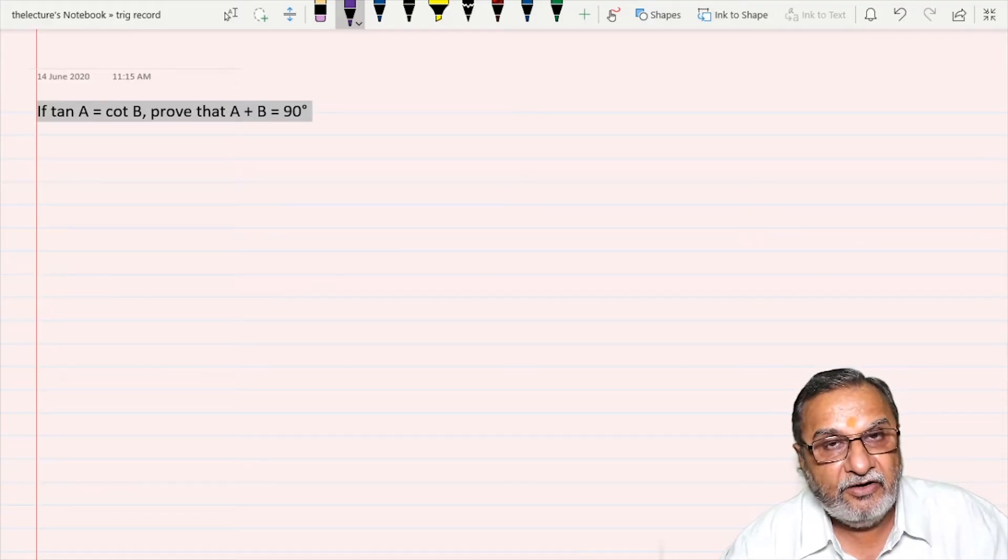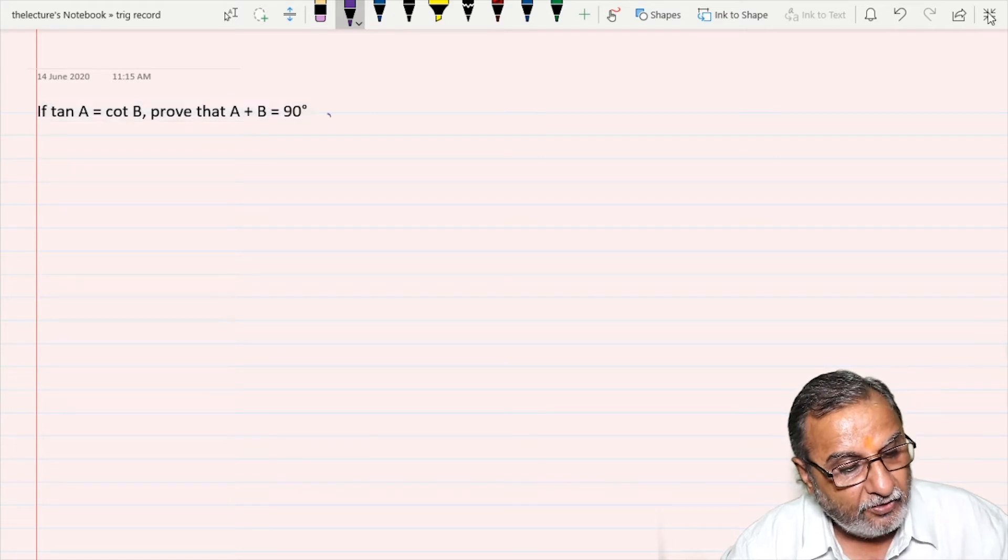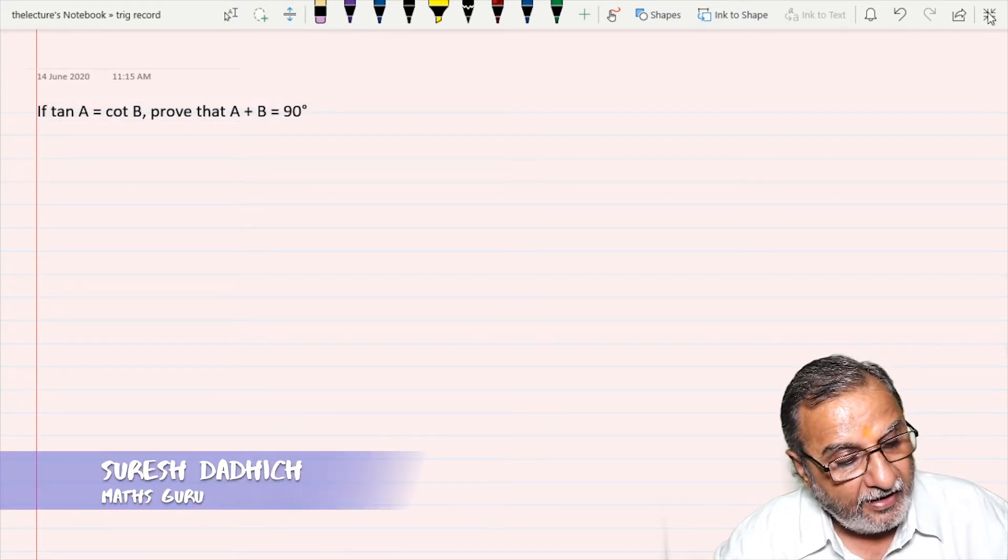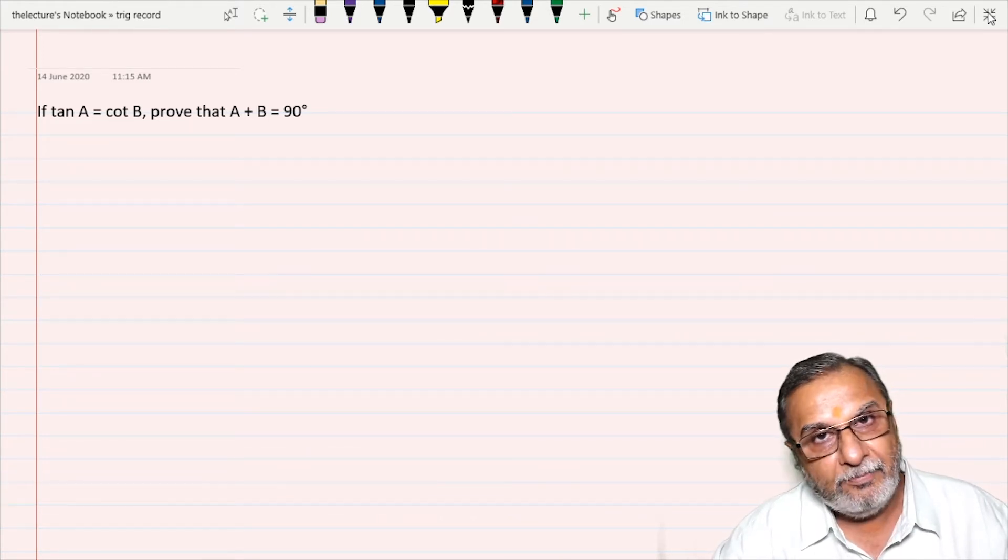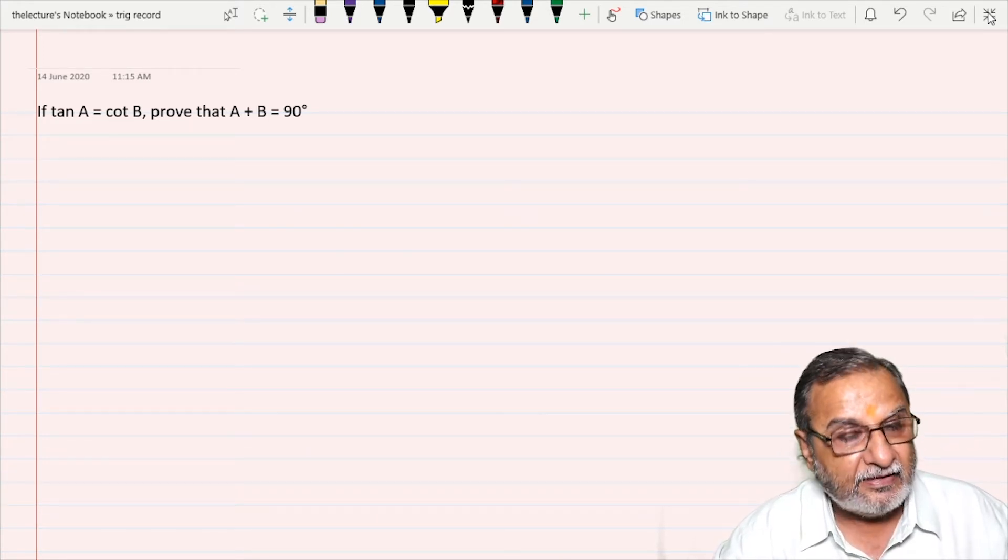Dear student, the question is taken from exercise 8.3, and the question is: if tan A is equals to cot B, then prove that angle A plus angle B is 90 degrees.